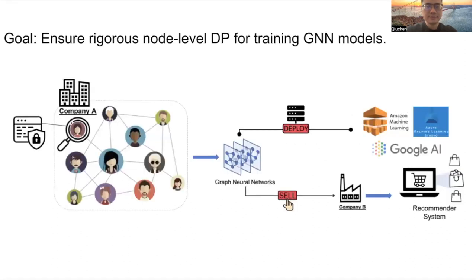In this paper, we address an important problem: to ensure strict node-level differential privacy for training graph neural network models. Our goal is to protect not only the feature information of each node, but also the connections between them.